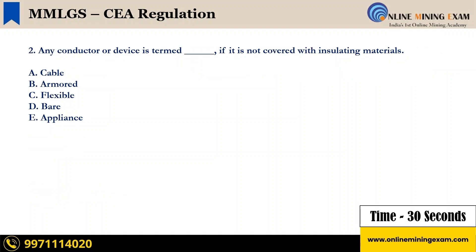Any conductor or device is termed dash if it is not covered with insulating materials. The options are: A) Cable, B) Armored, C) Flexible, D) Bare, E) Appliance. Your time starts now.